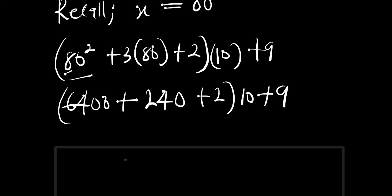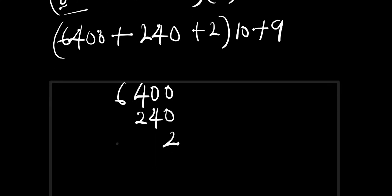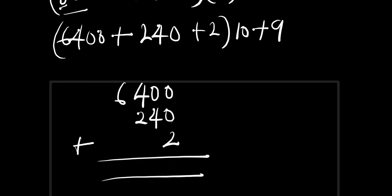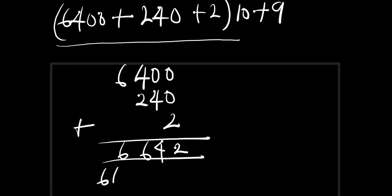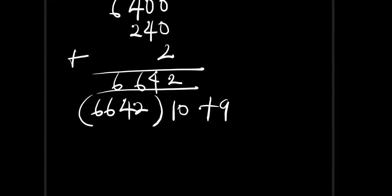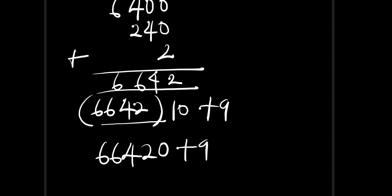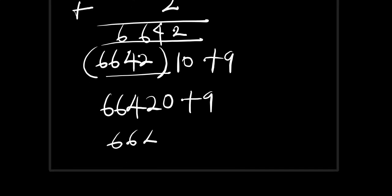Let's add this up: 6400 plus 240 plus 2 gives 6642. Remember there is a times 10 multiplying everything, so 6642 times 10 gives 66420, and then plus 9 gives 66429.